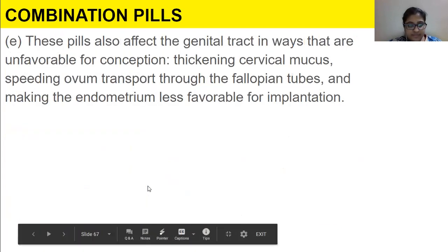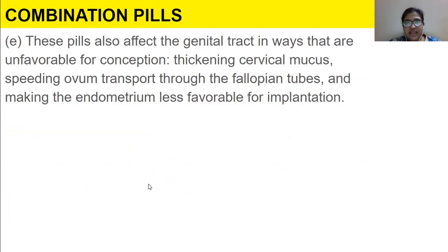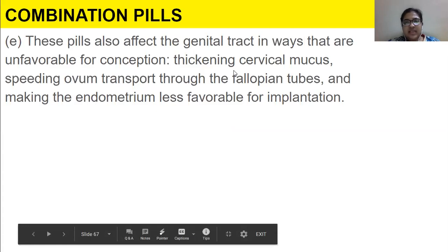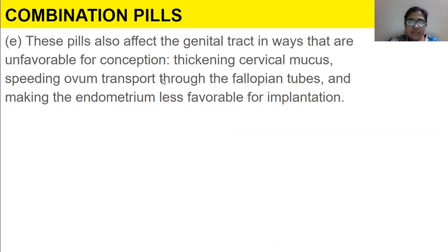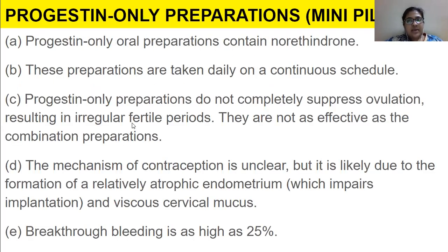These pills also affect the genital tract in ways that are unfavorable for conception, such as thickening of cervical mucus, speeding ovum transport through the fallopian tubes, and making the endometrium less favorable for implantation. The fallopian tube is the site of fertilization, so when an ovum passes through very quickly, it will have a hard time being fertilized.